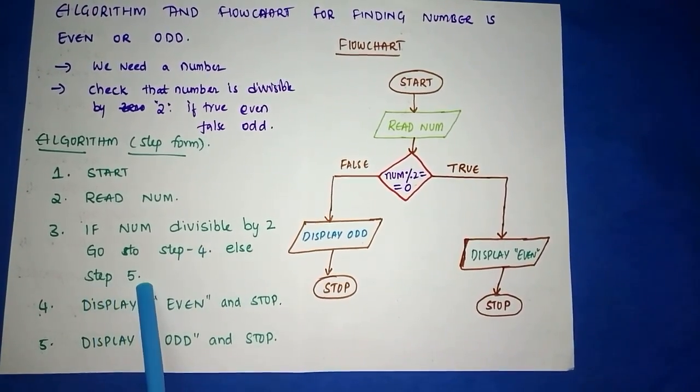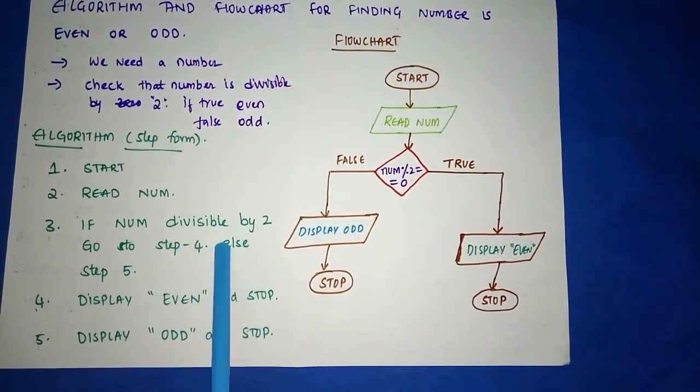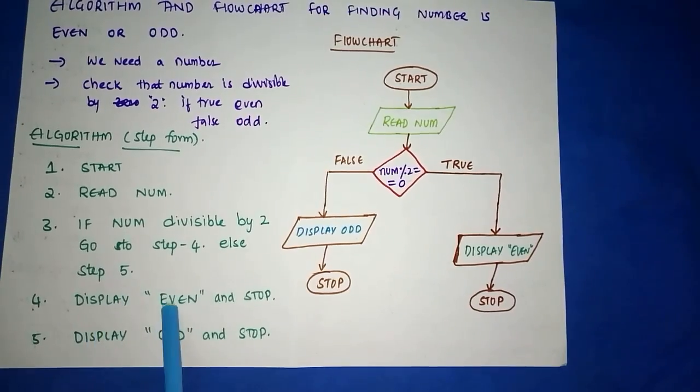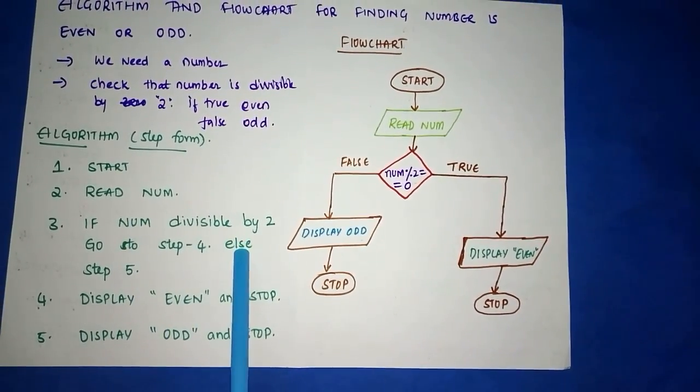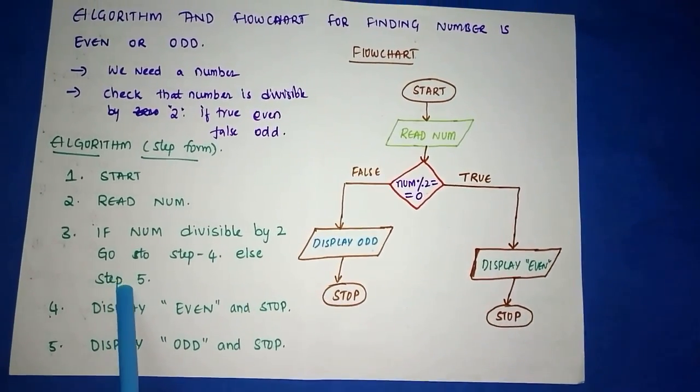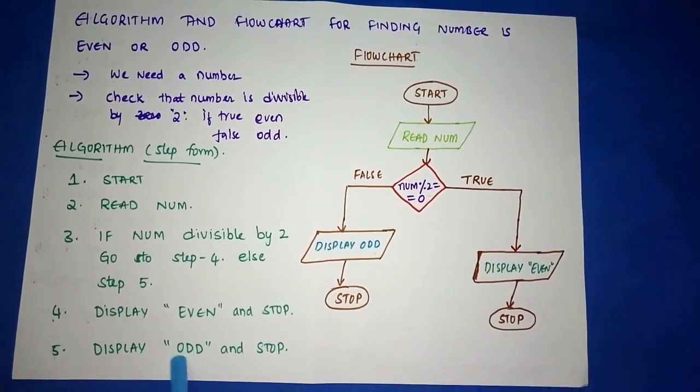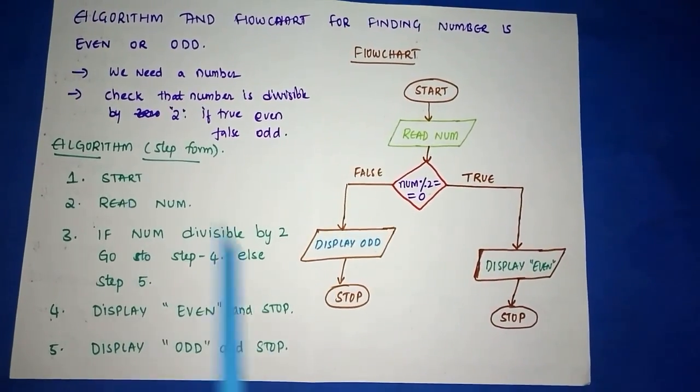So what is in step 4? Divisible by 2, that is true. Step 4: display EVEN and stop. And if it is false, that is else, where are you going? It is step 5. What is step 5? Display ODD and stop. This is how you write the algorithm.